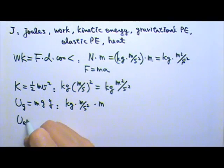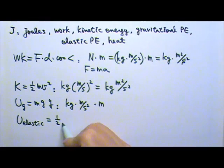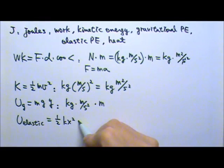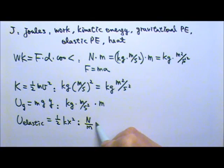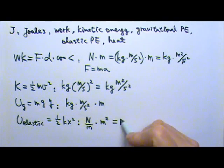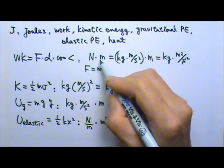What about elastic potential energy? That is one-half kx squared. So for units, one-half doesn't have a unit. The spring constant k has a unit of newtons per meter. And then the x is the stretched or compressed amount. So that's meters, and then you have to square this. So this is newton times meters, which is the same as that.